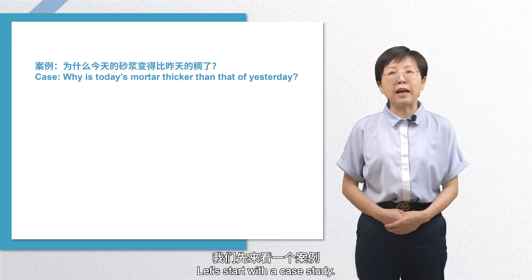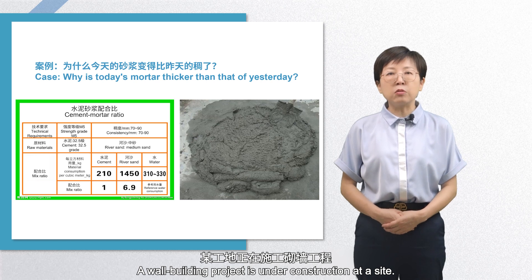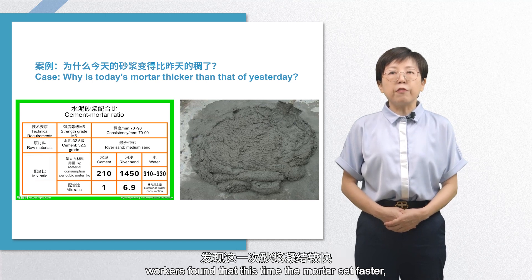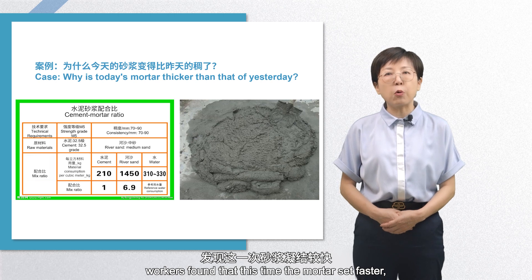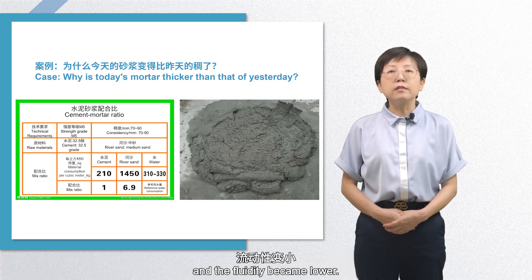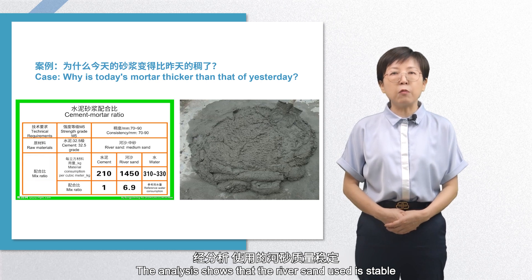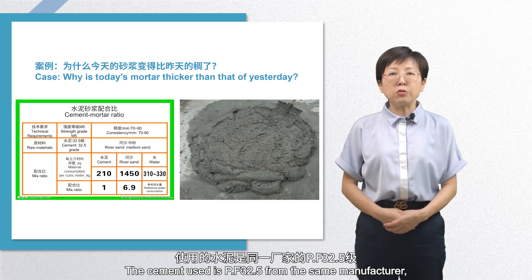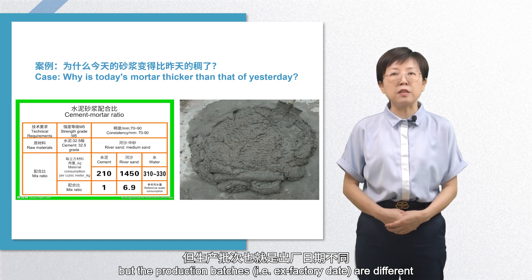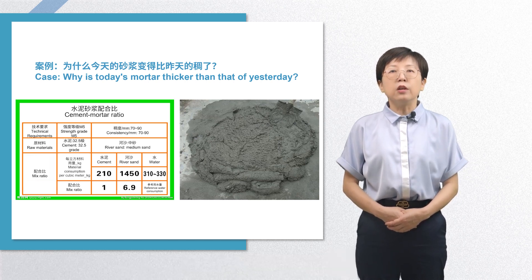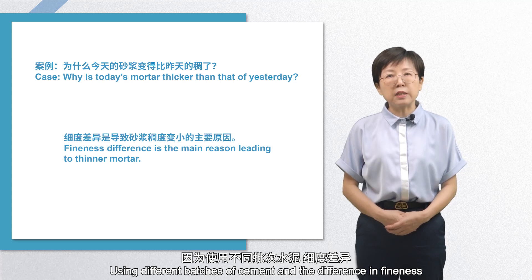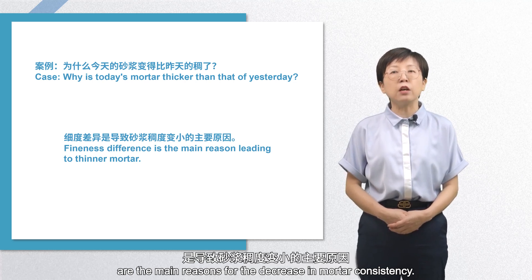Let's start with a case study. A wall building project is under construction at a site. After mixing mortar according to the original construction mix ratio, workers found that this time the mortar set faster. The measured consistency was lower than a few days ago, and the fluidity became lower. The analysis shows that the river sand used is stable and has great gradation. The cement used is PF32.5 from the same manufacturer, but the production batches are different, and the fineness of cement screen residue is different. Using different batches of cement and the difference in fineness are the main reasons for the decrease in mortar consistency.